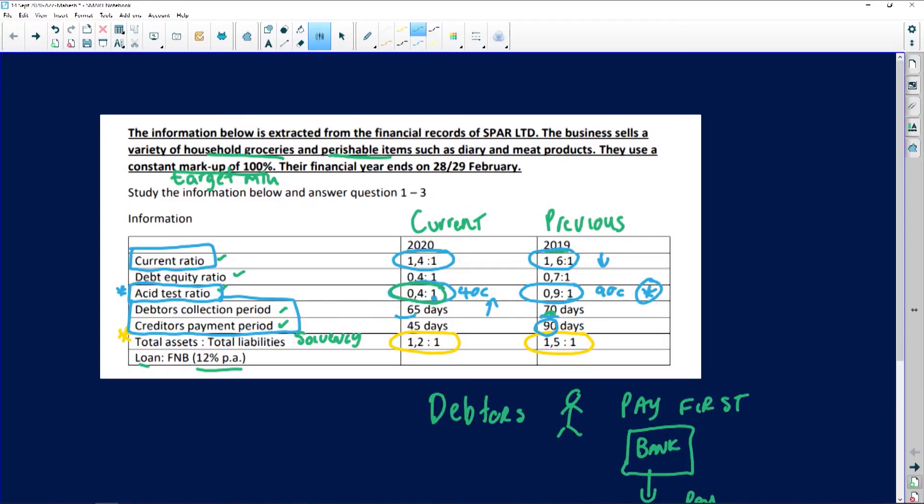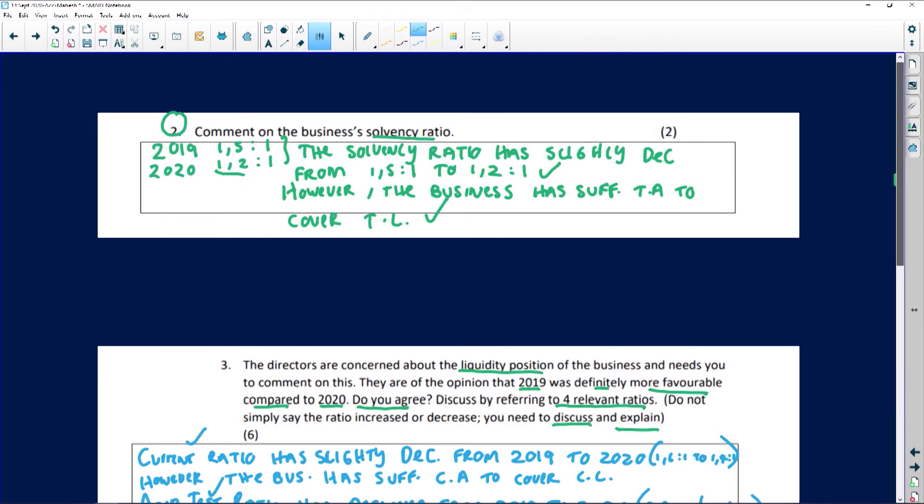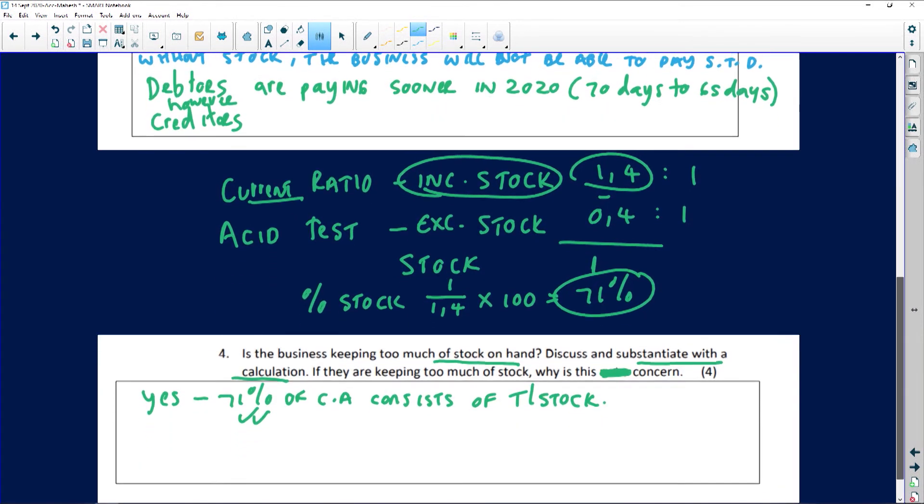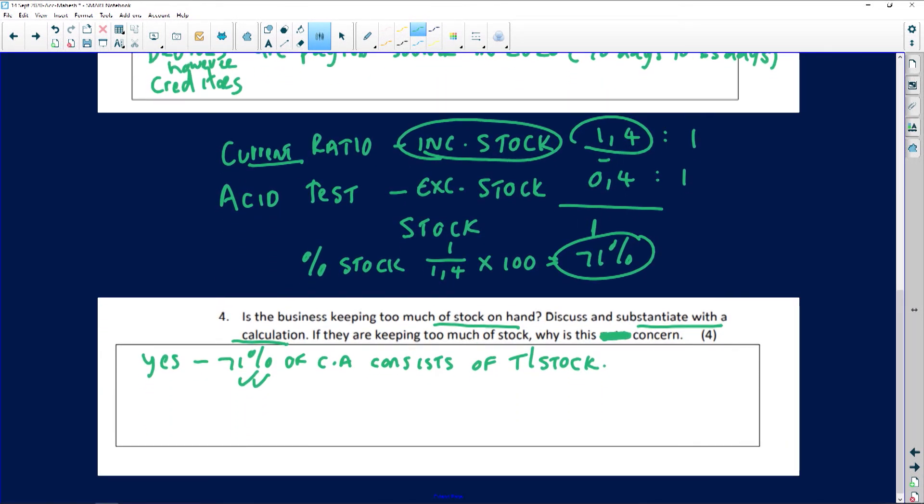Also remember buying too much of stock, there's a risk of theft, there's a risk of your insurance costs increasing, your storage costs increasing as well. And clearly because it's perishable items, there is that risk that after a while those items will no longer be valid or you will be able to sell the items because of the expiry dates and so on. So here the reasons why the business should not keep too much of stock or why is this a concern. Right, products, or you can mention that majority of the items that they sell are perishable.